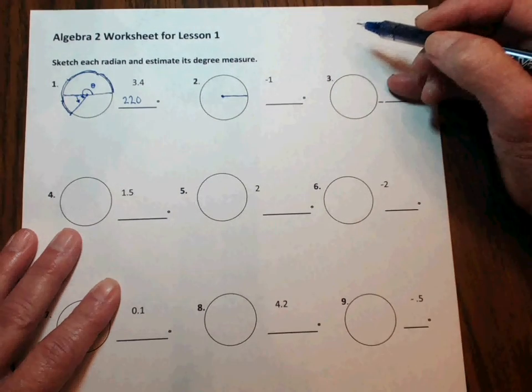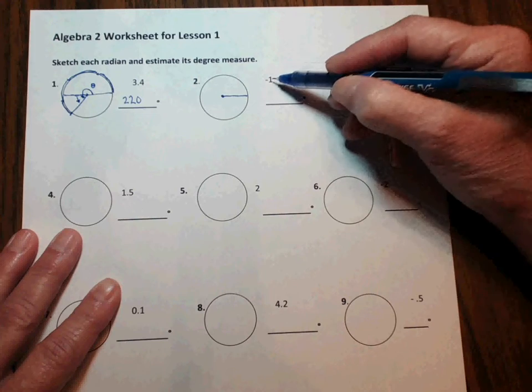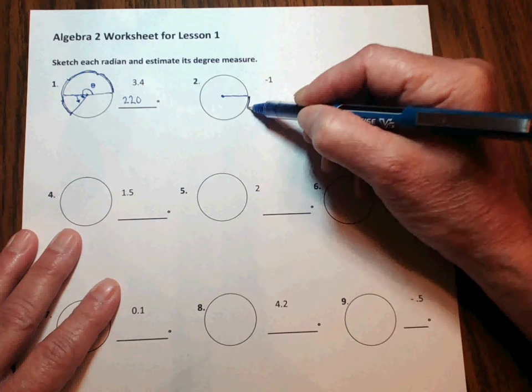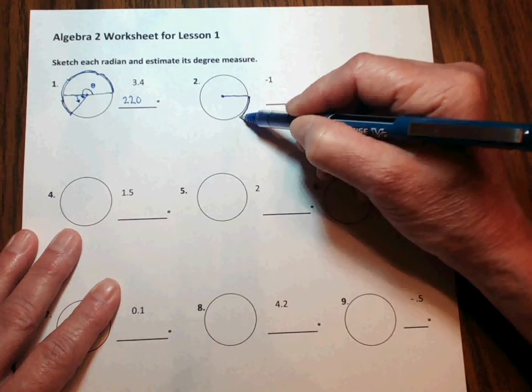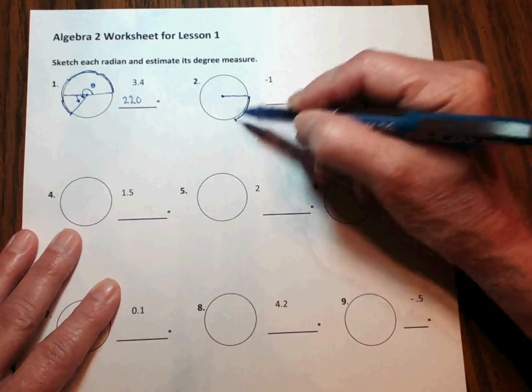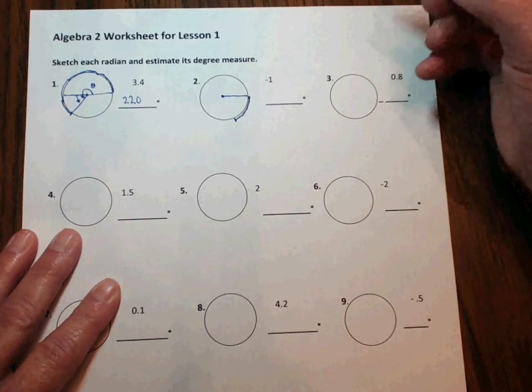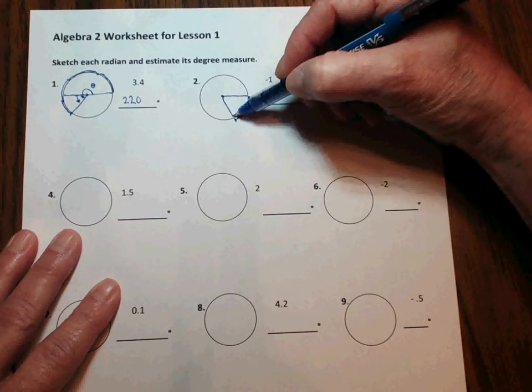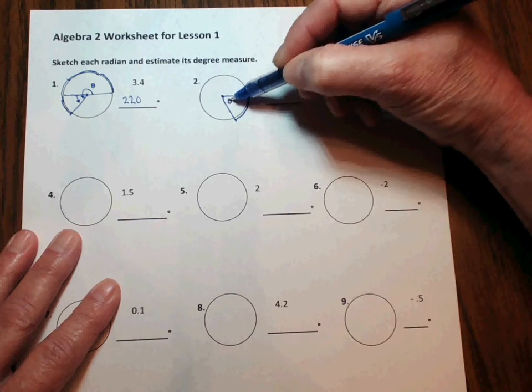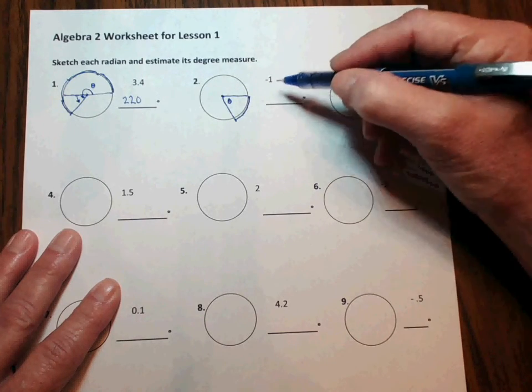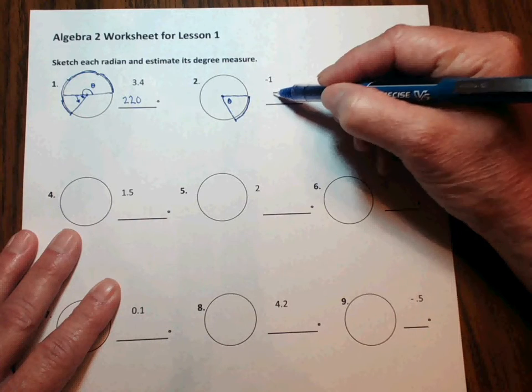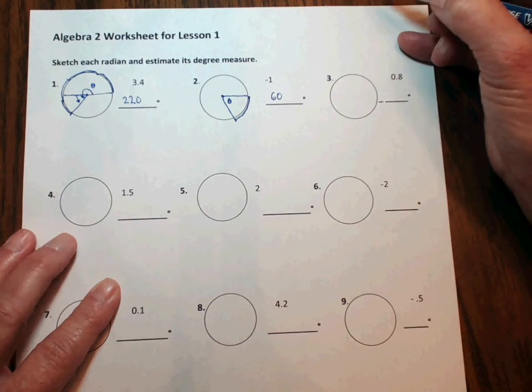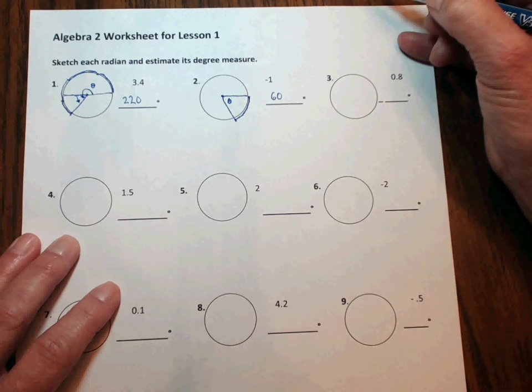This time we need to go backwards around the outside of the circle, trying to get the radius length to match. That looks kind of close. Finish the angle, the angle theta, and the degree measure estimate looks to be something like 60 degrees, basically upwards. That's it, that looks good.